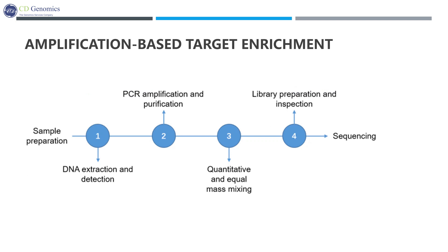Pre-NGS targeted enrichment can also be carried out by the PCR strategy, also known as amplicon-based target enrichment. Compared to hybridization-based capture, greater primer and probe specificity is achieved. Higher on-target sequencing reads can be obtained by amplicon-based enrichment, which has been preferentially used on the basis of short preparation time and small DNA input amounts. Thus, amplicon-based NGS enables fast, accurate, and cost-effective detection of genes of interest.